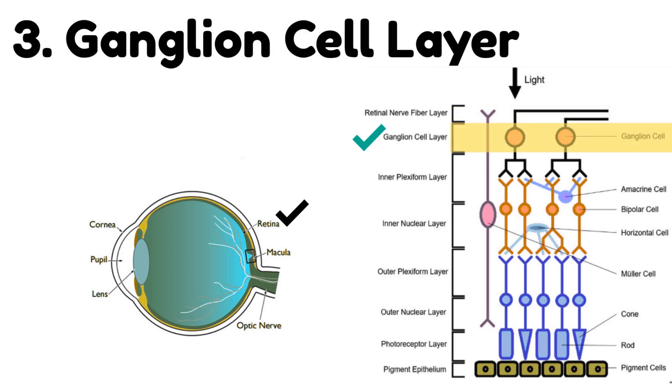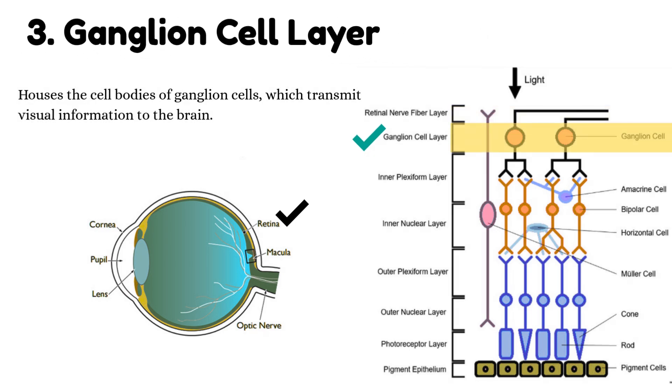Number 3: Ganglion cell layer. This layer houses the cell bodies of ganglion cells, which transmit visual information to the brain.